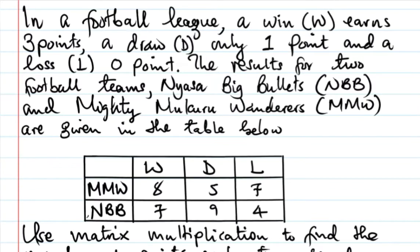Let's see the solution of this matrix problem. The question reads: In a football league, a win (W) earns three points, a draw (D) only one point, and a loss (L) is zero points.